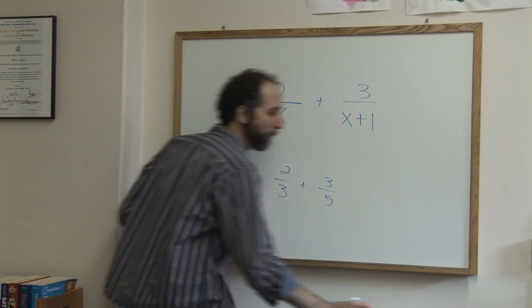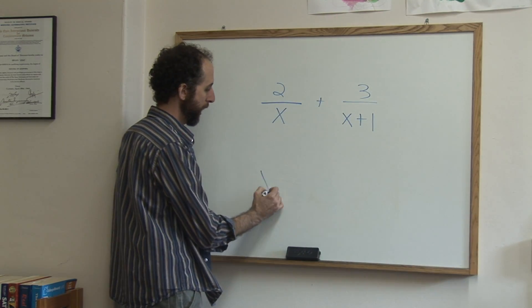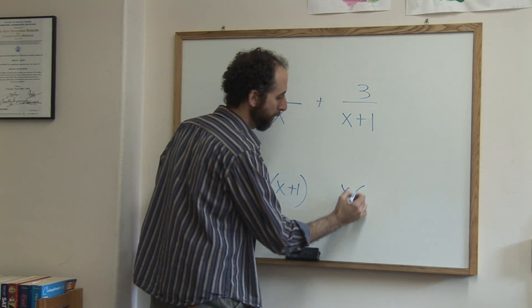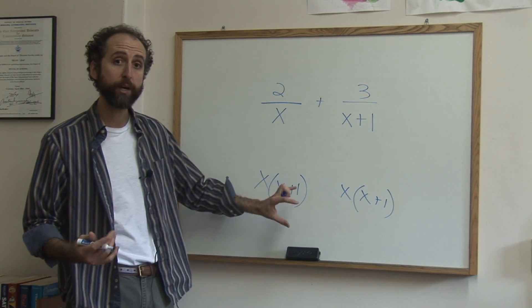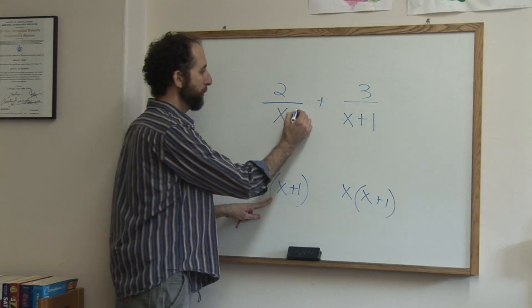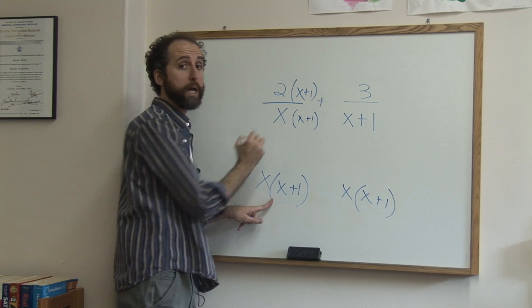So I'm going to multiply, in order to get that common denominator of x times x plus one here and here, just like you would with a normal fraction, you say what do I need to multiply by here? What I'm missing is this part. So I'm going to multiply the bottom by that and the top by that.